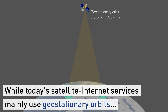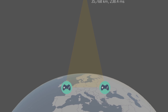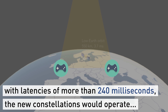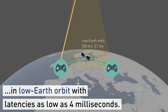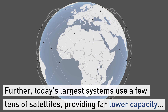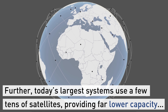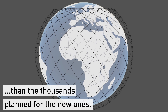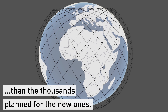While today's satellite internet services mainly use geostationary orbits with latencies of 240-plus milliseconds, the new constellations would operate in low Earth orbit with latencies as low as 4 milliseconds. Further, today's largest systems use a few tens of satellites, providing far lower capacity than the thousands planned for the new ones.